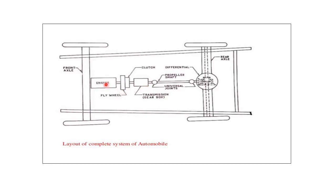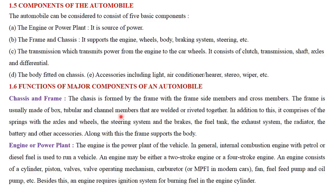The main units of automobiles are: the basic structure, which includes the frame, axle, wheel, and suspension system; then the power plant, which is the engine; the transmission system, including clutch, gearbox, propeller shaft; the control systems, including the braking system and steering system; and lastly the superstructure, which is the body that covers the vehicle over the chassis frame.